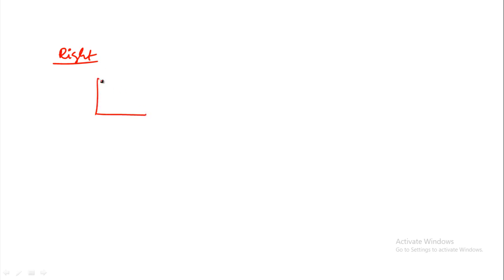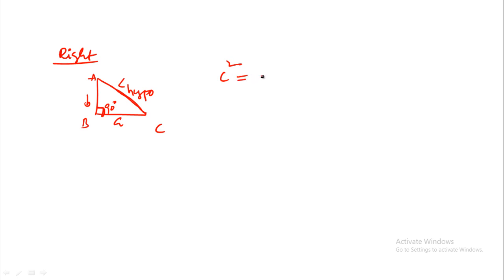A right angle triangle has one angle equal to 90 degrees, with the side opposite the right angle being the hypotenuse. By the Pythagorean theorem: hypotenuse squared equals the sum of the squares of the other two sides, that is c squared equals a squared plus b squared. Right angle triangles appear in many exam models.